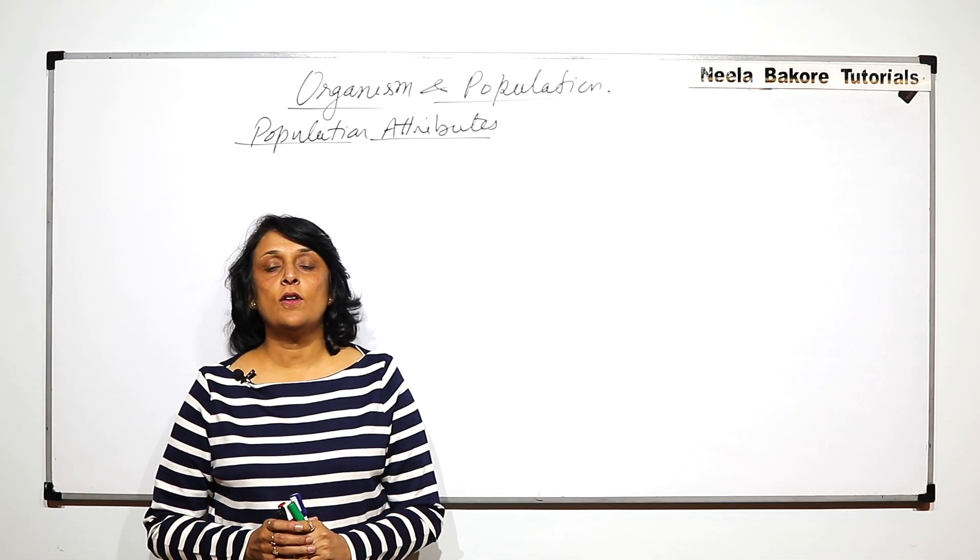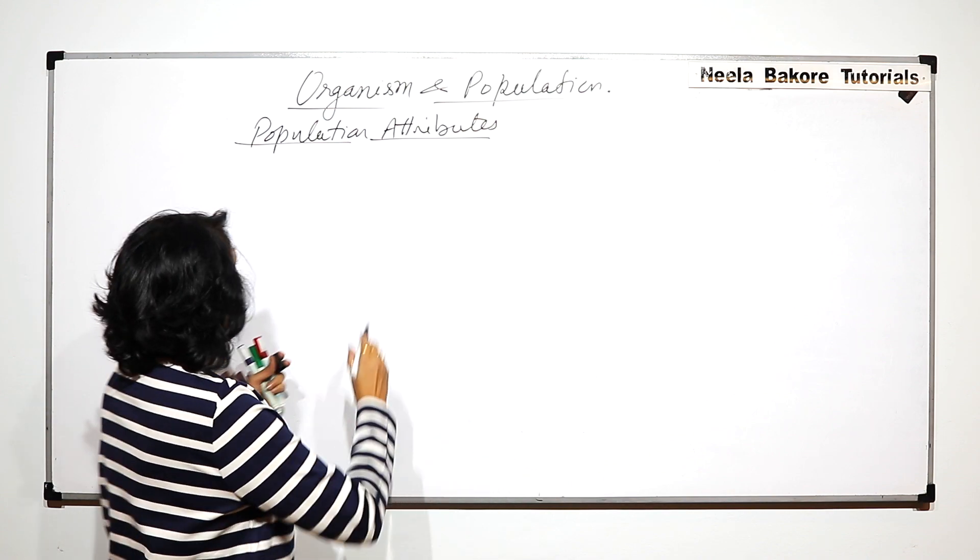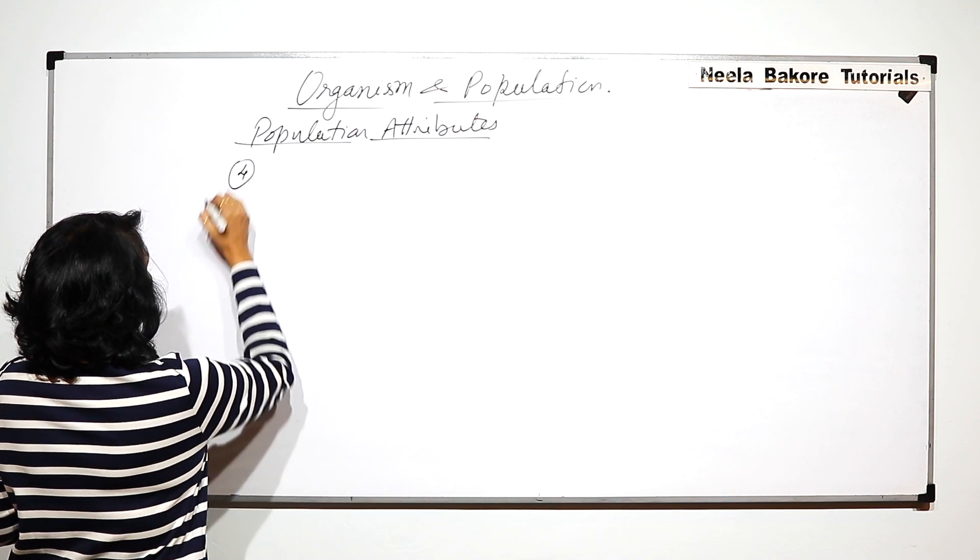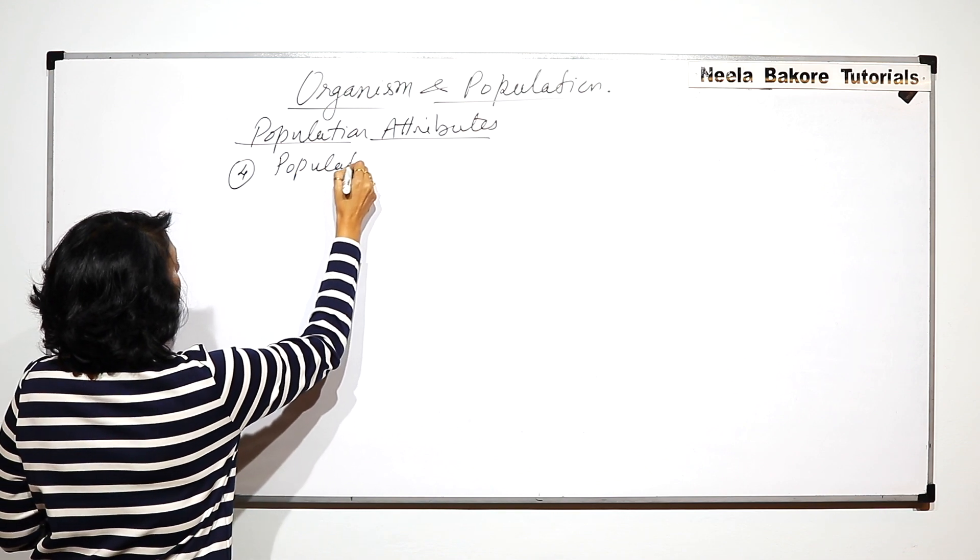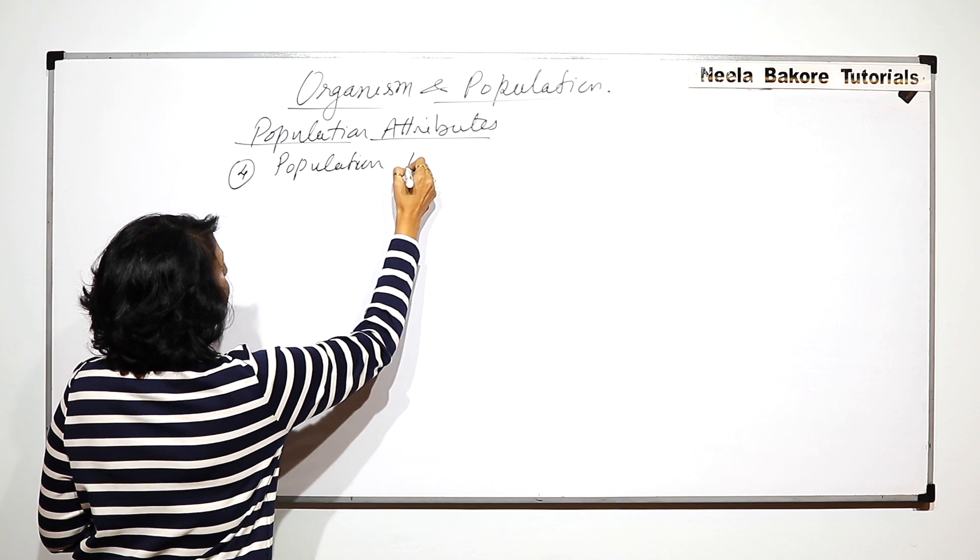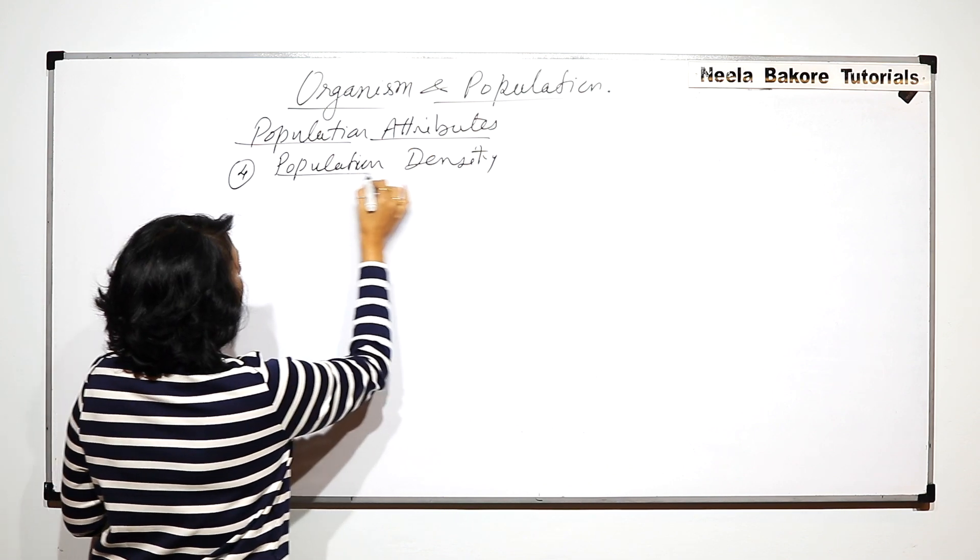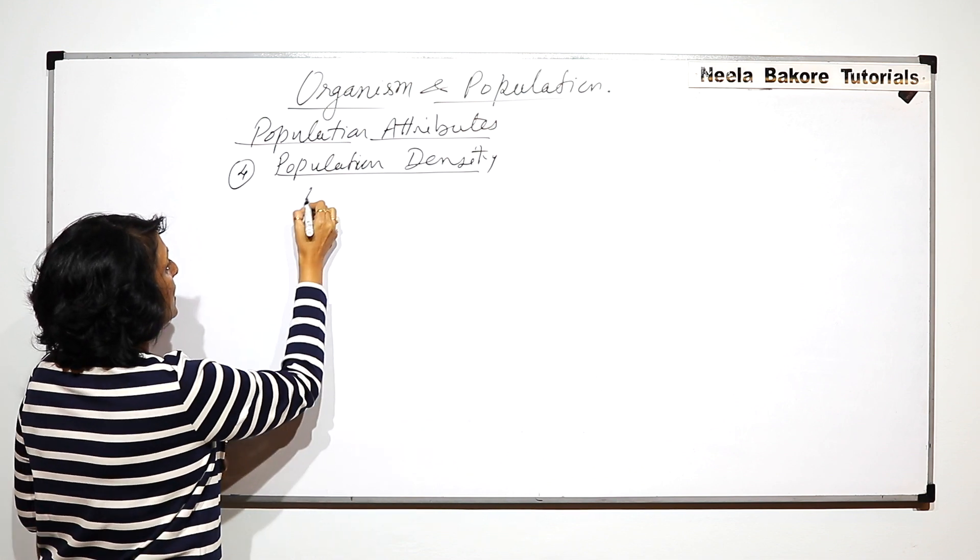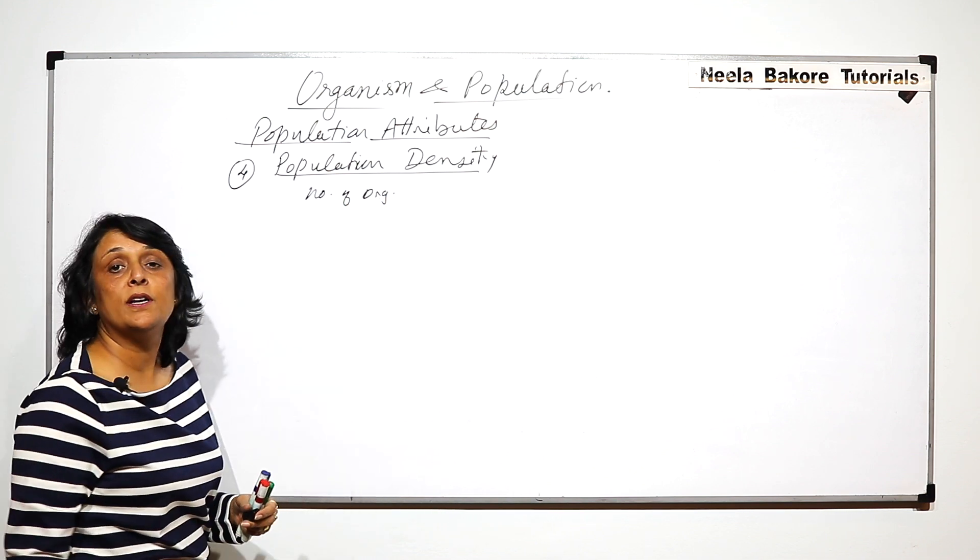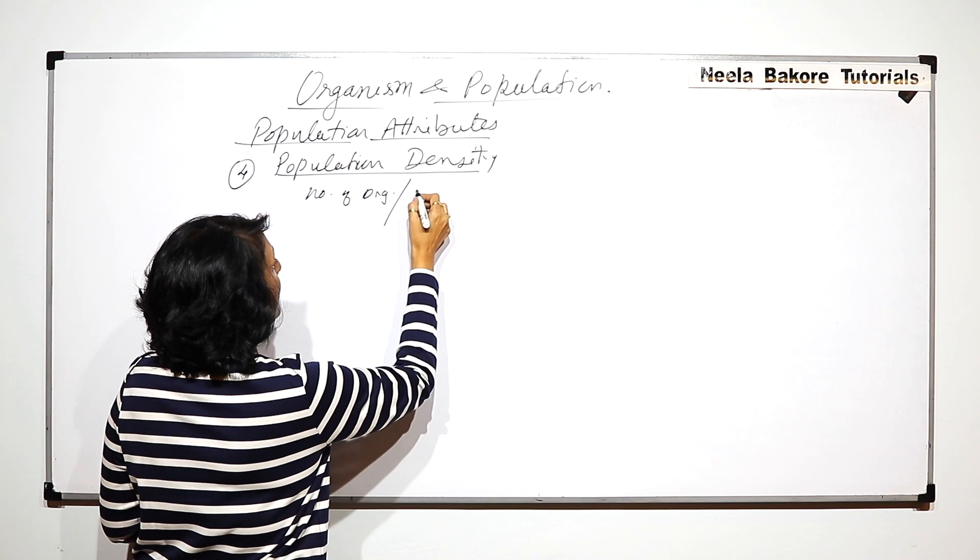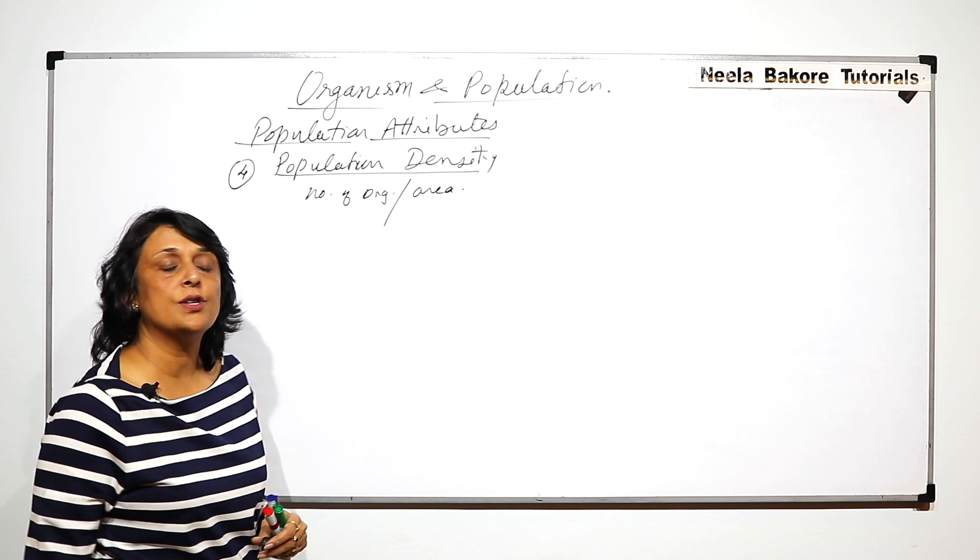In the previous part we talked about three population attributes. Now we'll take up one more and that is called population density. Population density means number of organisms of a particular species per unit area.